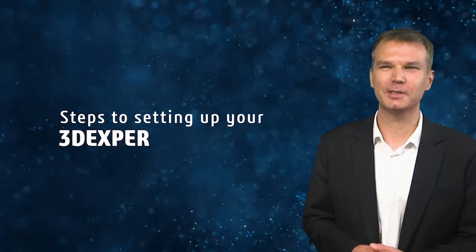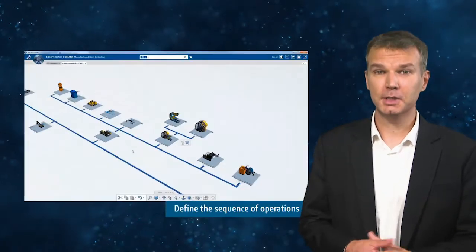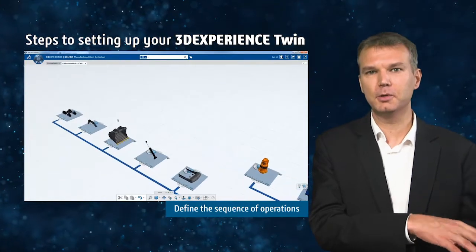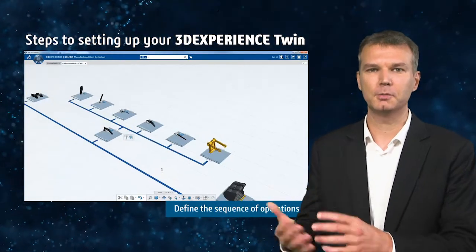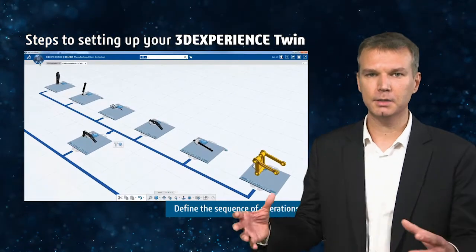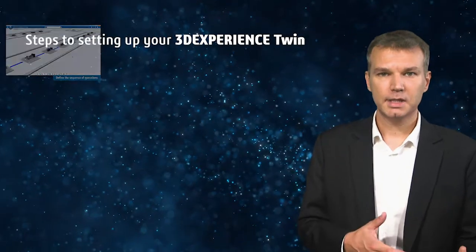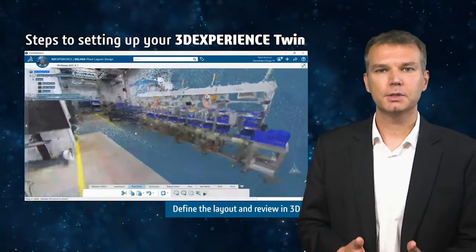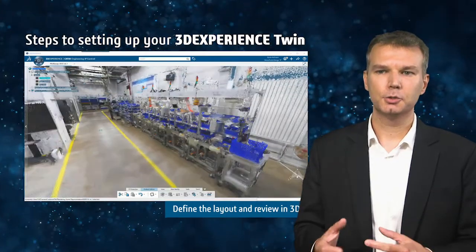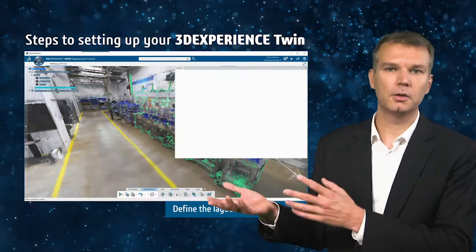Let me walk you through the different steps you need to create a 3D Experience Twin. The first step is to understand how to start from an engineering BOM and convert it into a manufacturing BOM — what are the different components, what are the different assemblies, and where are the places where you should be assembling them. The second step is to understand all of those processes in a 3D context: should you start with 2D drawings, point clouds, or CAD data?